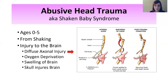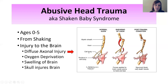Diffuse axonal injury is injury to the axons that happens widespread throughout the brain. Oxygen deprivation can also occur — when there is a lack of oxygen, the brain is cut off from oxygen, and that's also called anoxia. That's another type of result that can occur with abusive head trauma.